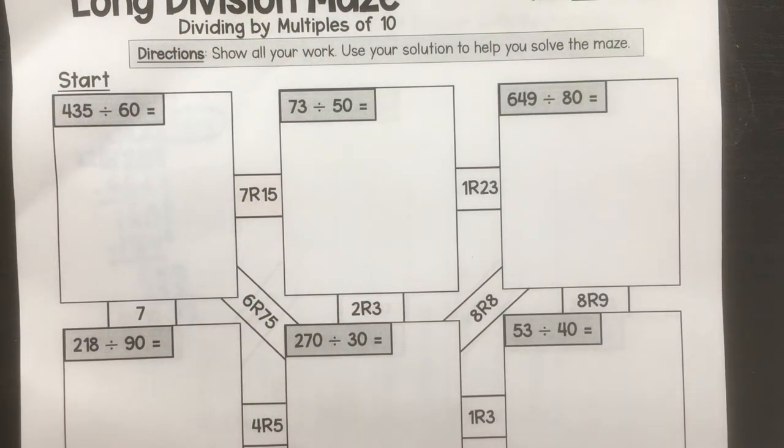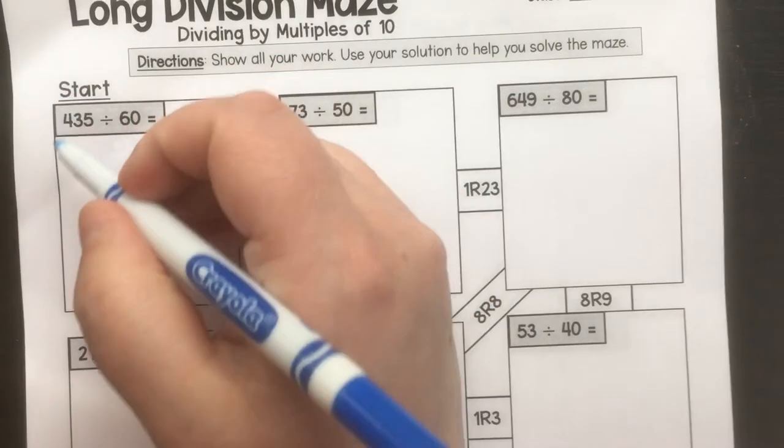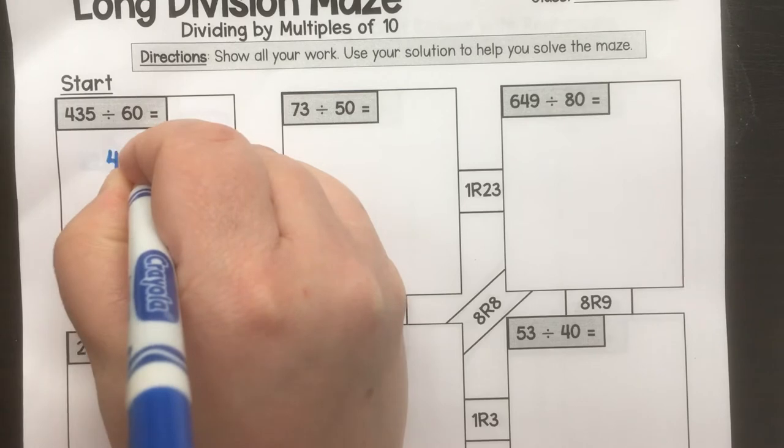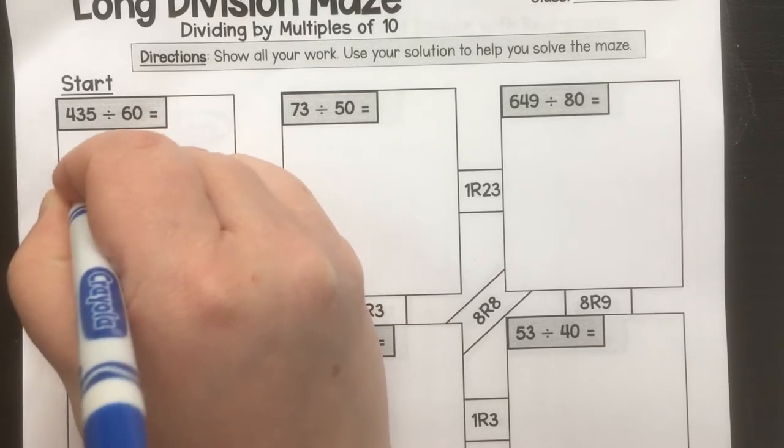You're going to show all your work and I'm going to show you how to do this. I'm going to do the first problem with you. You're going to do all your work in the box. So the first one we look at, it says start. We'll do this problem first. We're going to do 435 divided by 60.